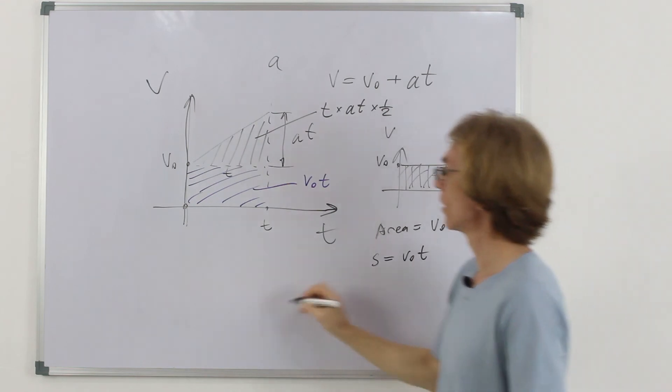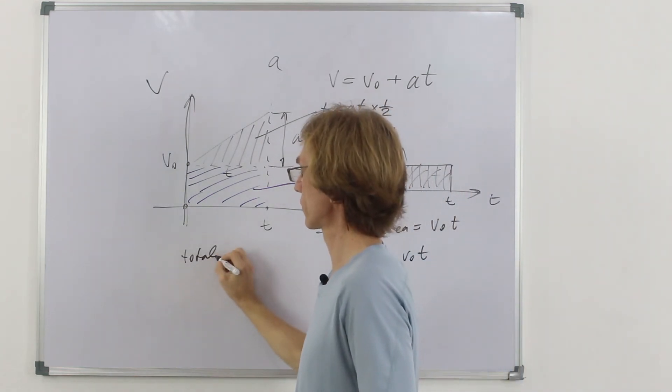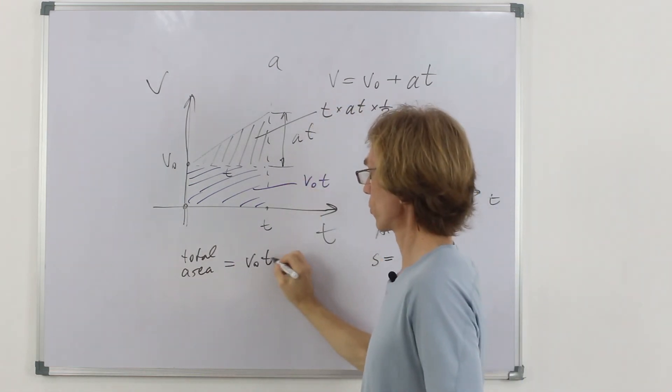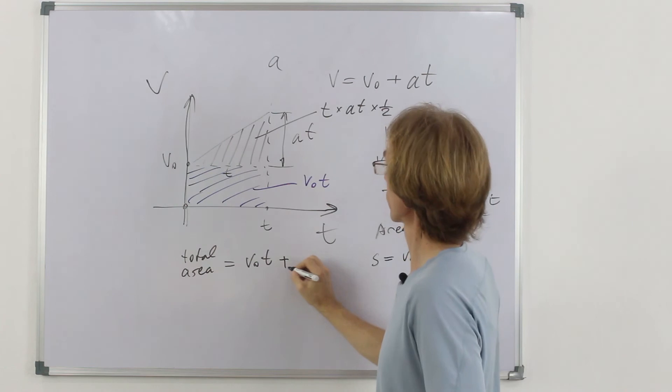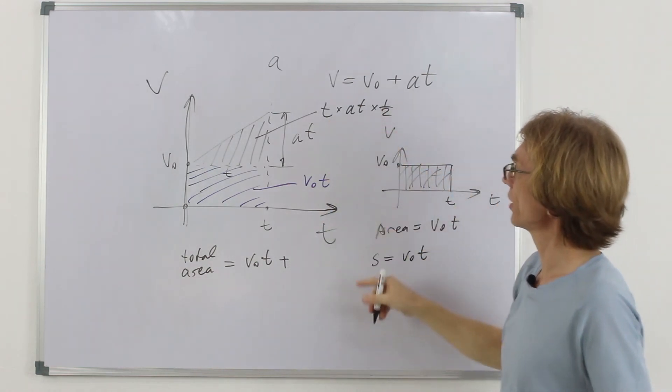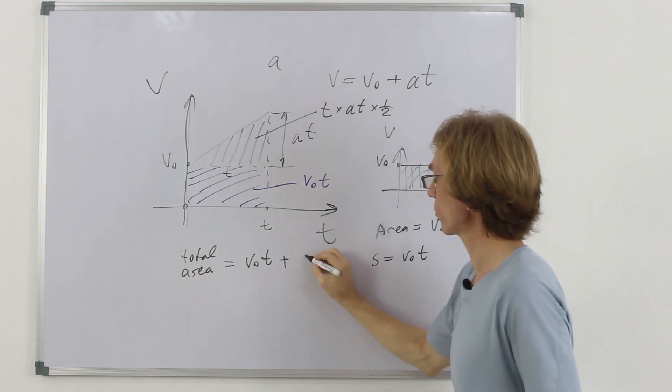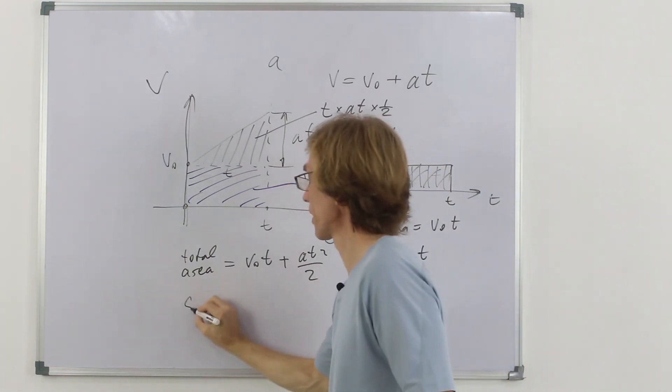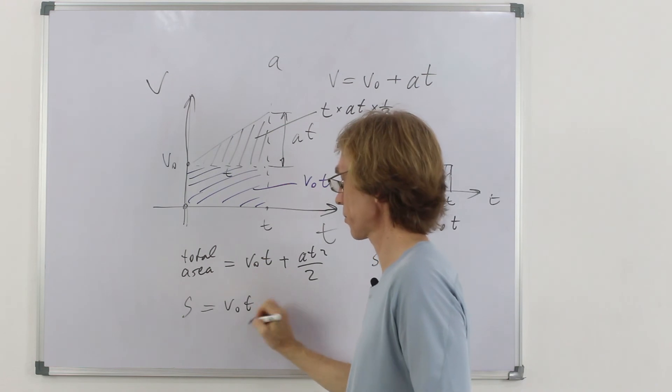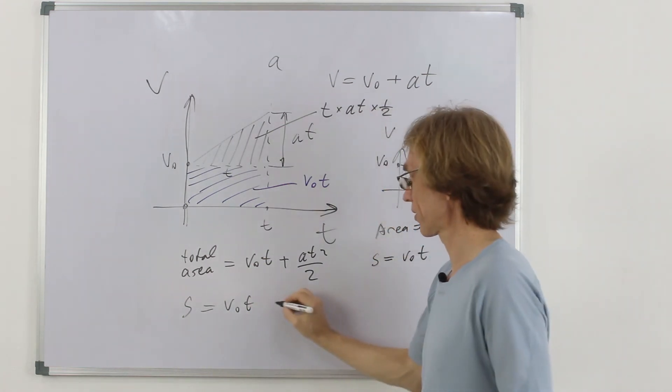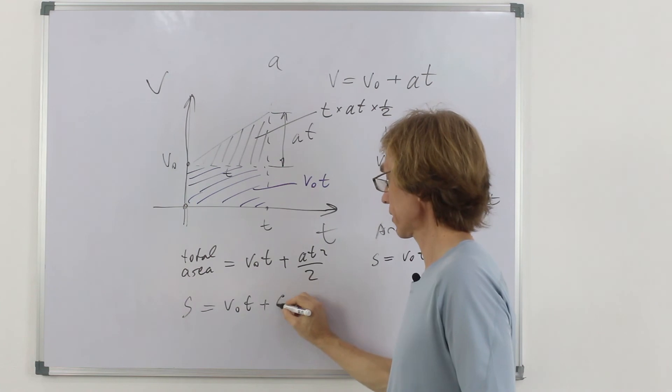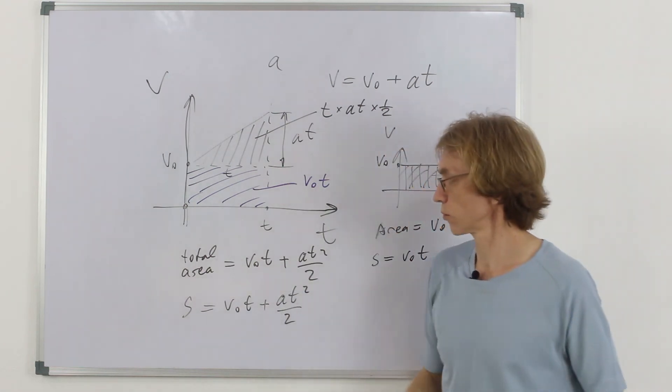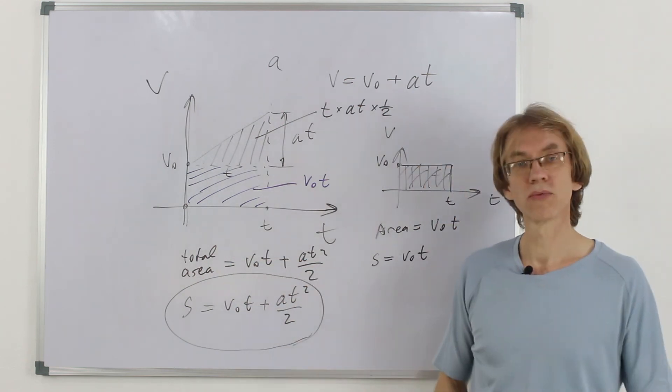These are two areas. So, what is total area? The area is v0 t plus, and now, t by t is t squared and divided by 2. We can write just a t squared over 2. But total area is the displacement. So, we have finally our formula. Displacement is initial velocity by time plus acceleration times squared over 2. That's our formula.